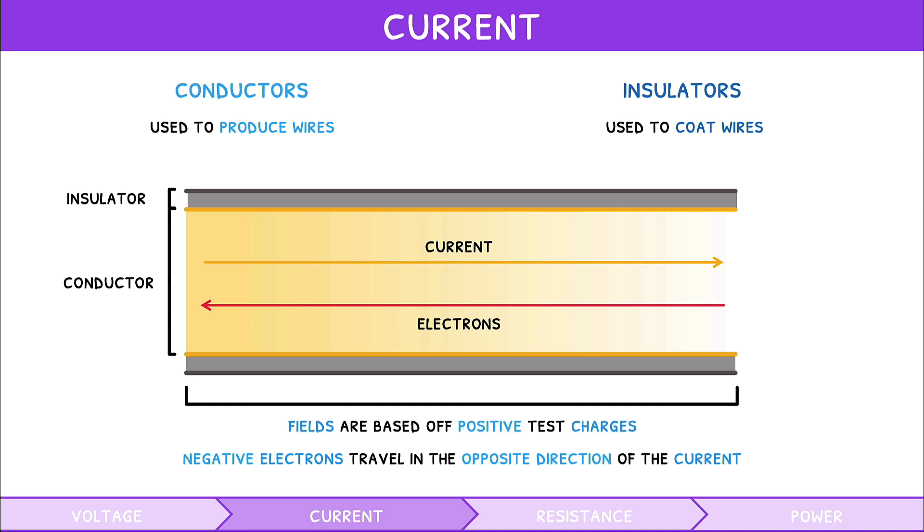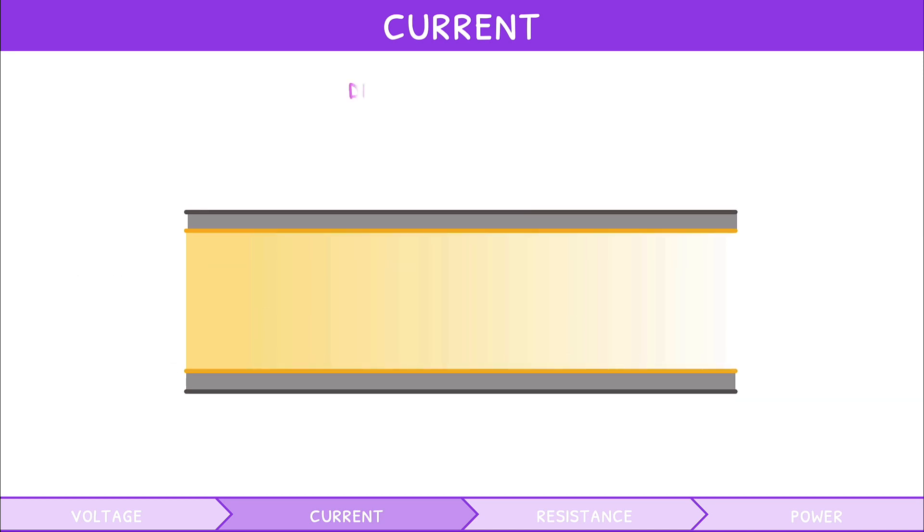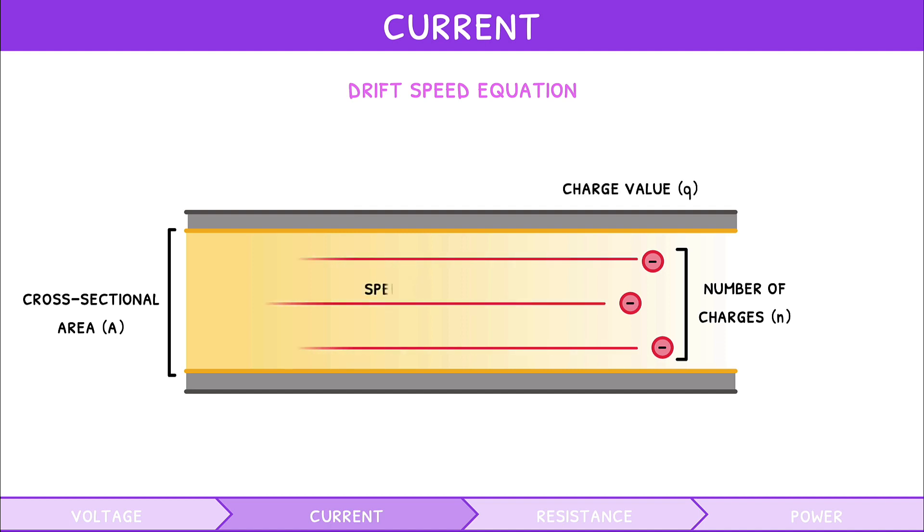For your IB Physics exam, you need to be able to calculate the current in a metal wire using a formula called the Drift Speed Equation. It relates the number of charges N, cross-sectional area of the wire A in meters squared, charge value Q in Coulombs, and their speed V in meters per second. The formula is current equals number of charges times cross-sectional area times speed times charge value.